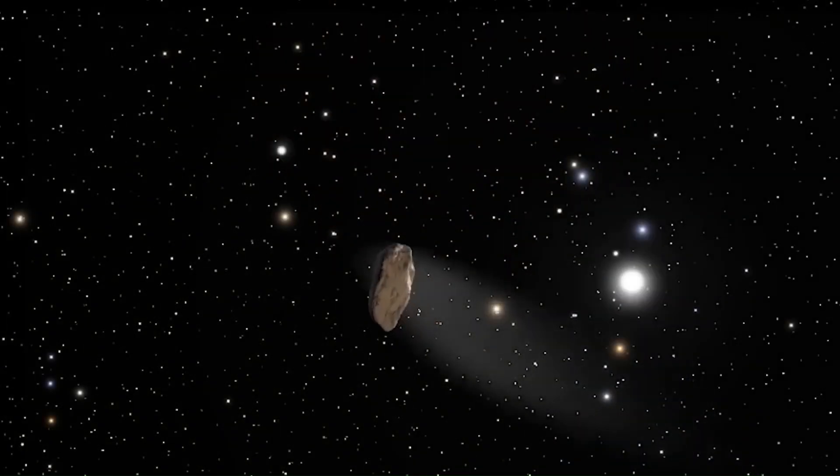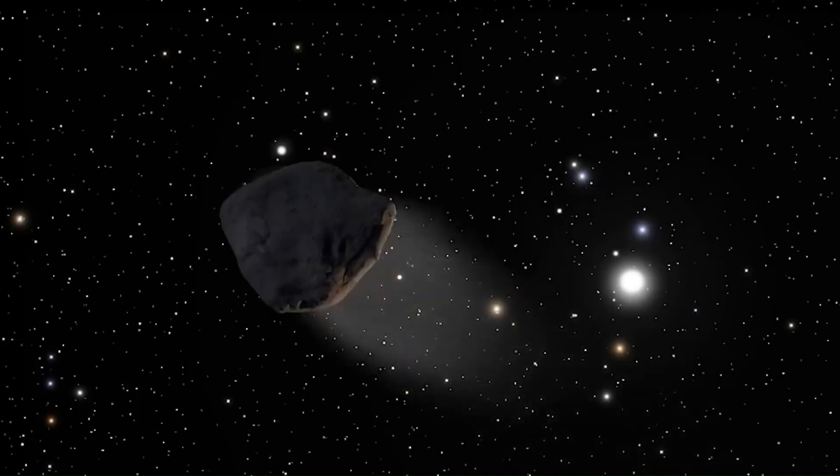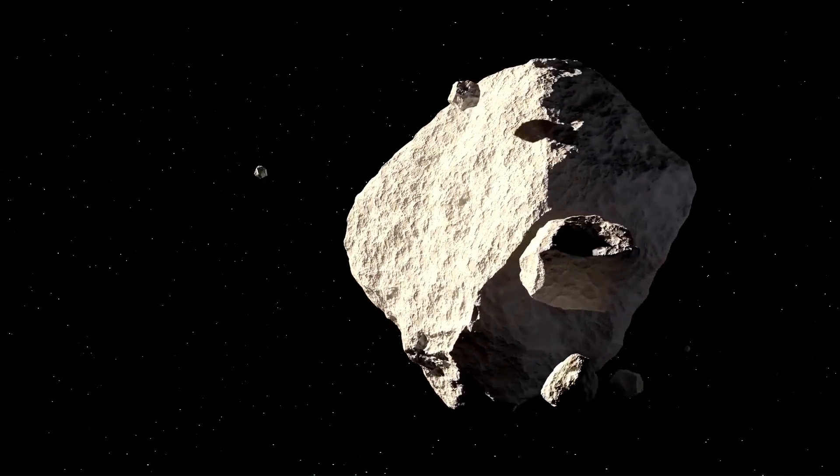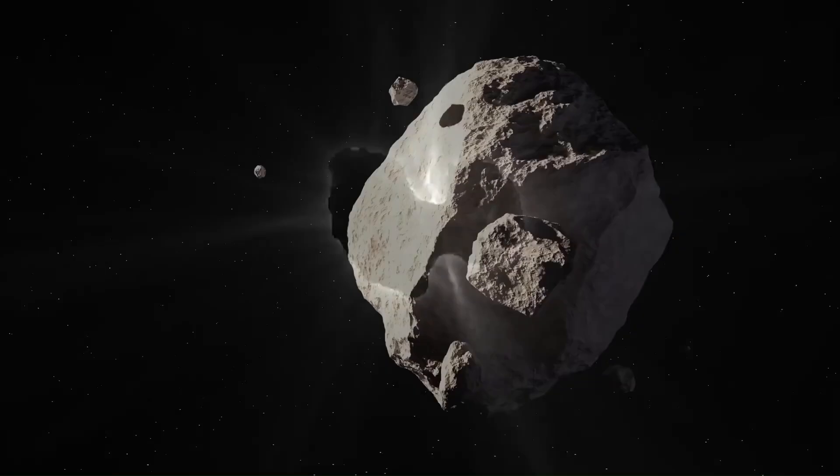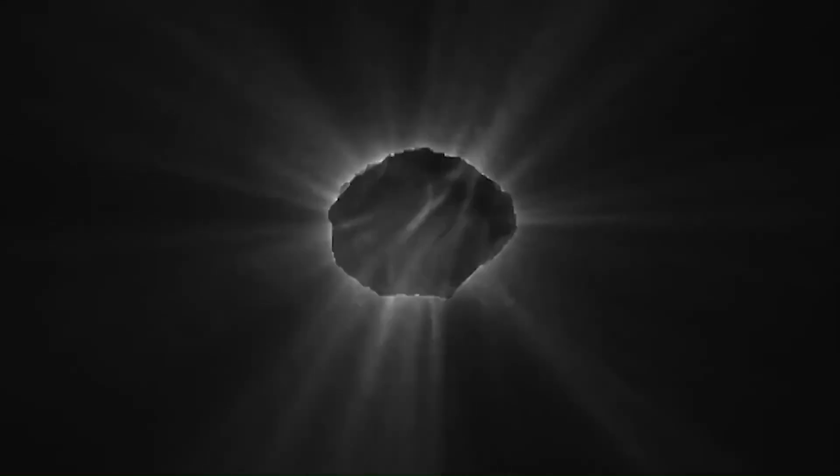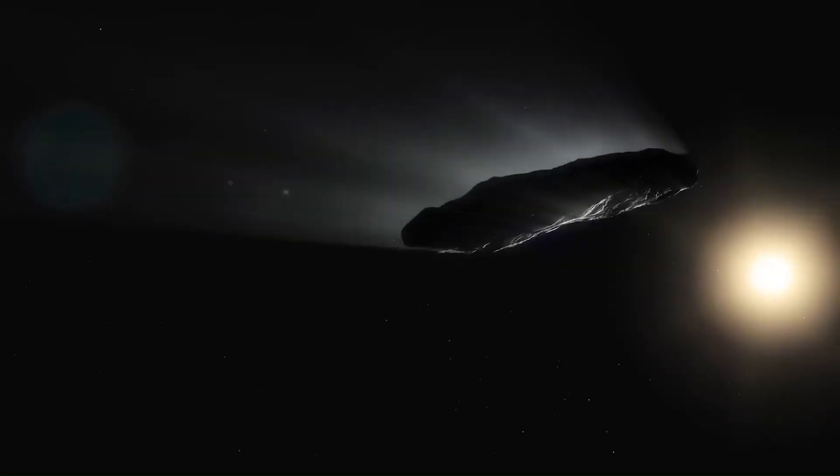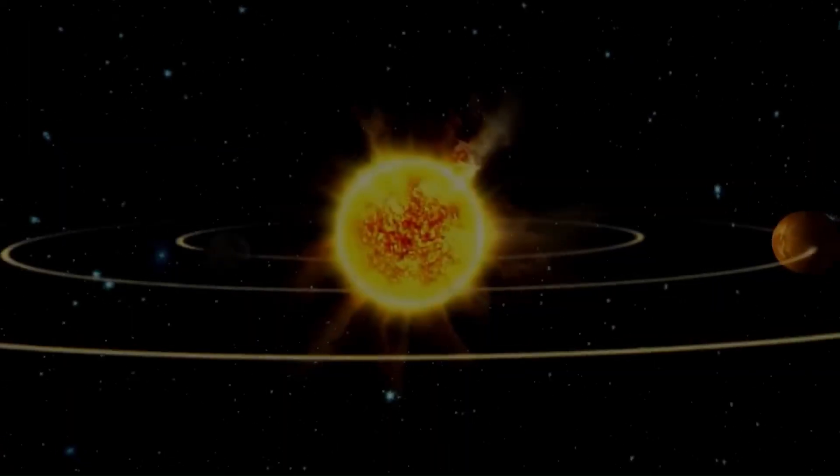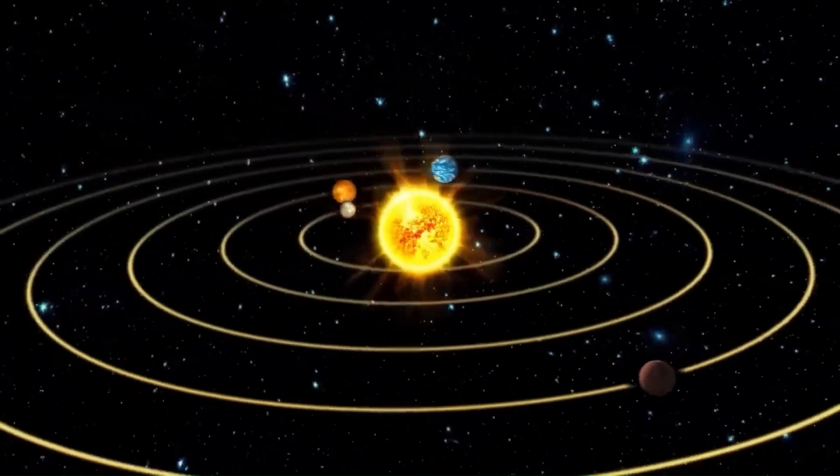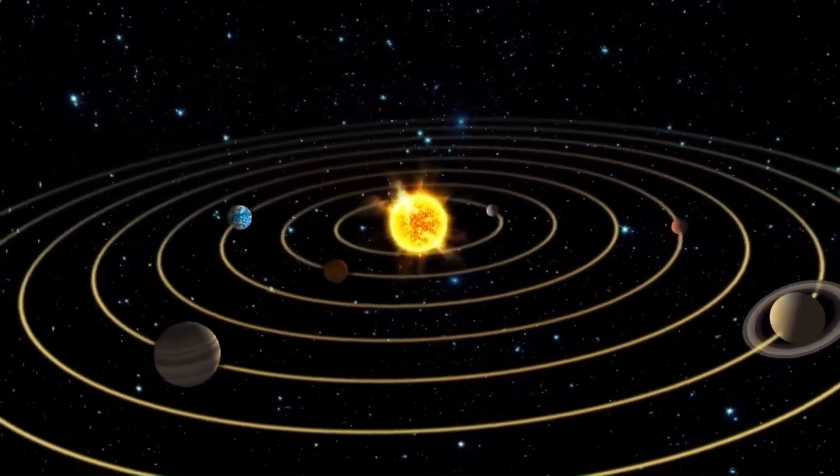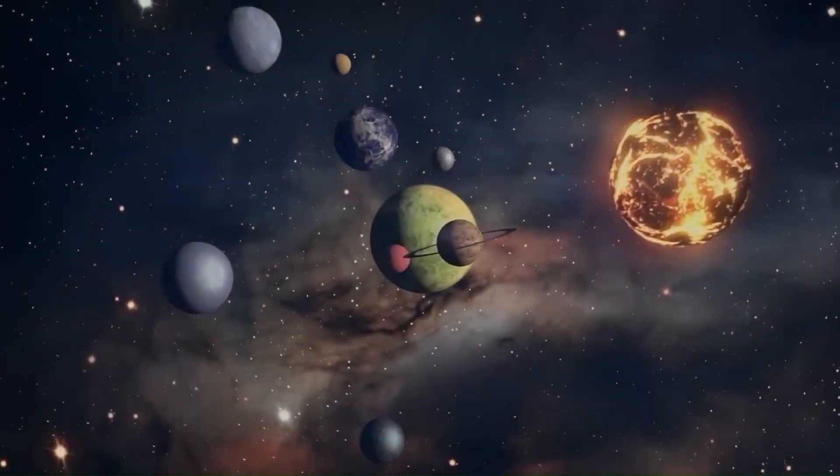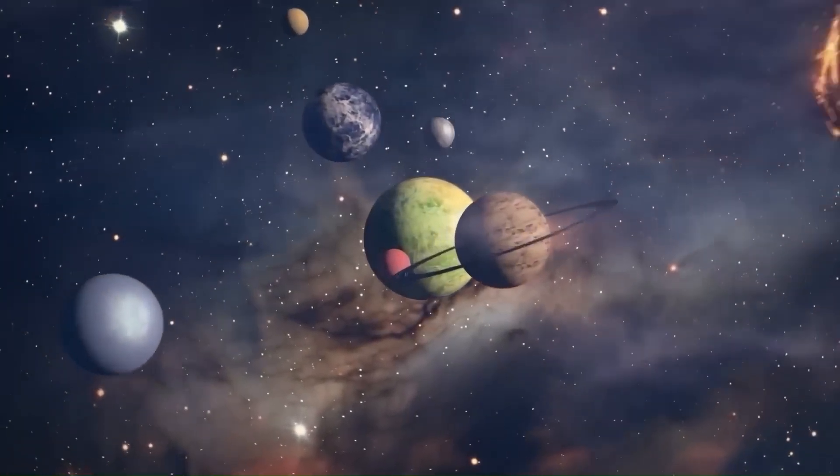3I Atlas is much larger than Oumuamua, possibly between 1 and 15 kilometers across compared to about 100 meters. Its size makes it far brighter and easier to study. At the same distance, it's over 250 times brighter than the interstellar comet 2I Borisov. This means it's either much bigger or producing far more dust and gas. But despite looking like a comet at first glance, it behaves differently. Comets usually have a bright tail pointing away from the sun. Hubble images show 3I Atlas releasing dust toward the sun instead, with only a weak tail in the opposite direction. It also has a bright dust halo slightly ahead of it, something no ordinary comet shows.